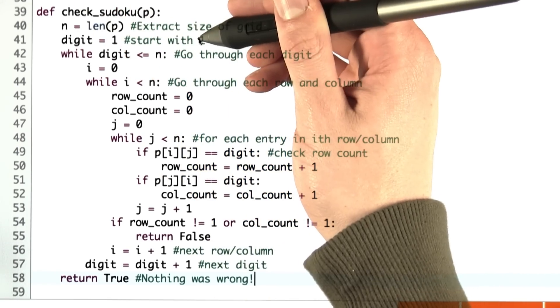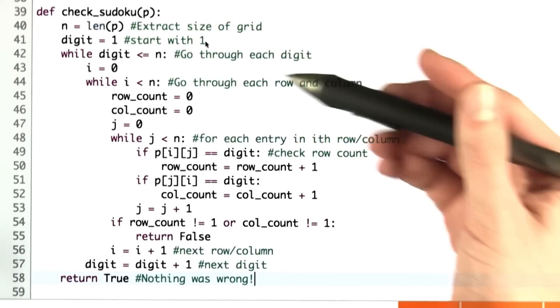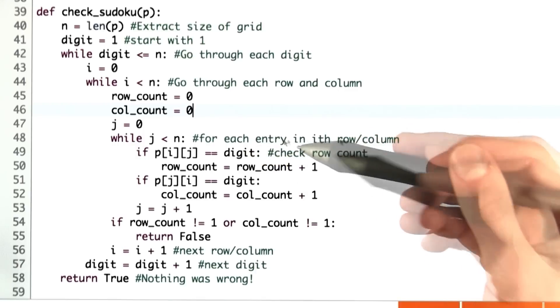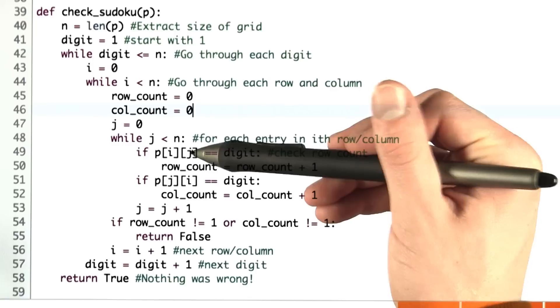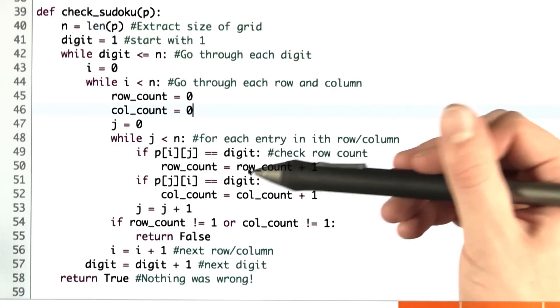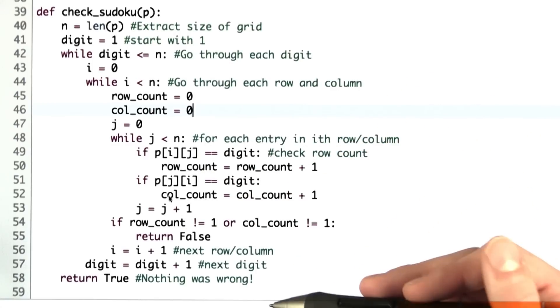Then we start with the first digit and go through each digit, checking each row and column at the same time. For each entry in the row and column, we see if that entry equals our digit. If it does, we increment our counts. Otherwise, we just move on to the next entry.